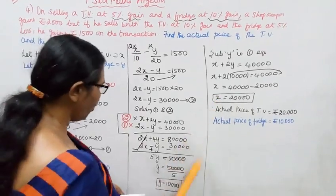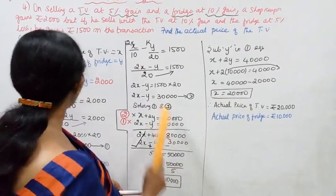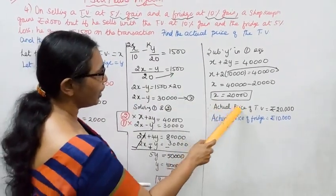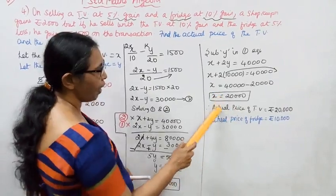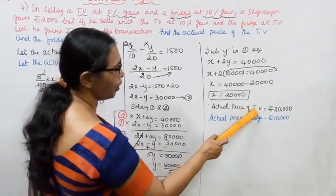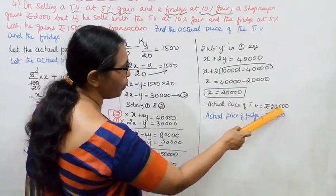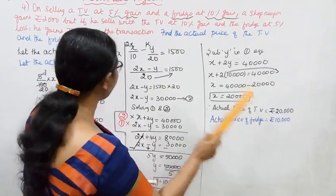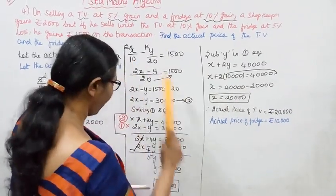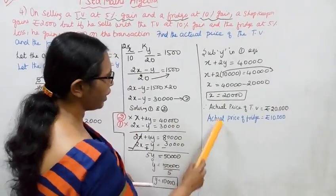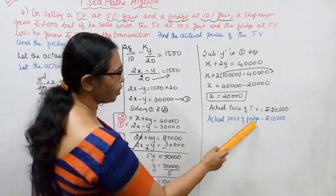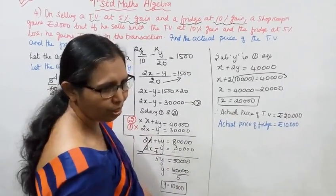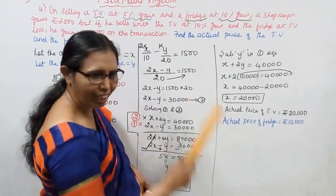Therefore, the actual price of the TV is X, which is Rs. 20,000. And the actual price of the fridge is Y, which is Rs. 10,000.